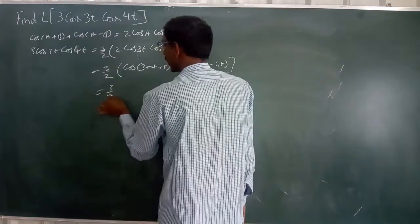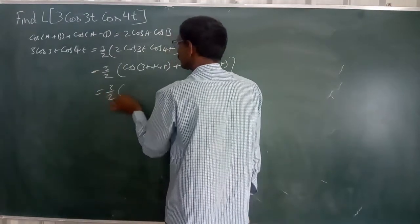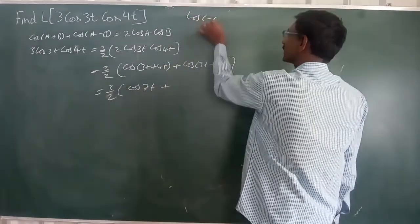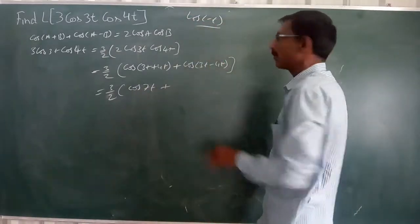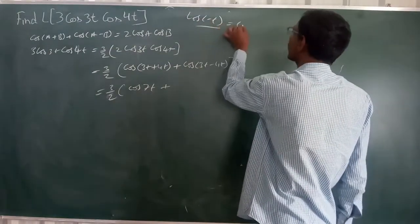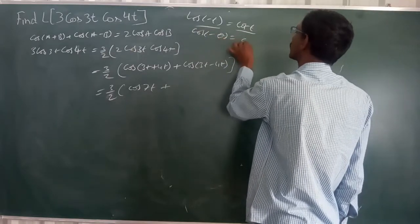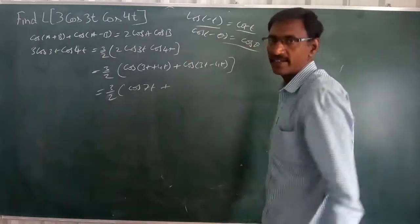Now, we get 3 by 2 into cos 7 theta plus cos 2 theta minus theta. This is a bit different. But, cos minus theta is nothing but cos theta only. Keep in mind. Cos of minus theta is always equal to cos theta. This is very very important.